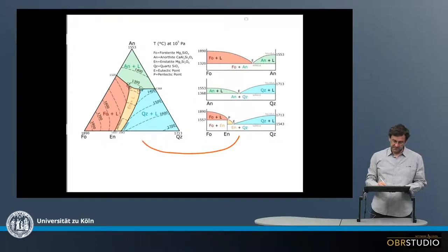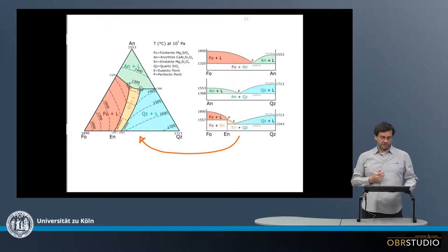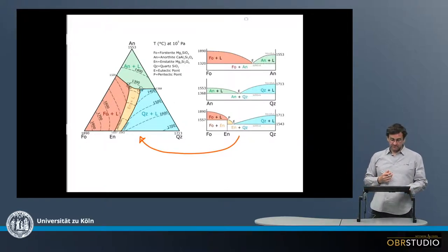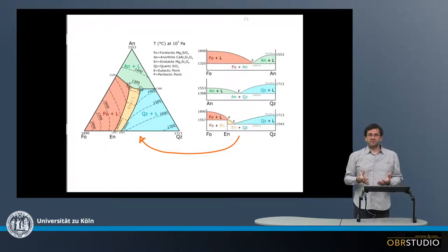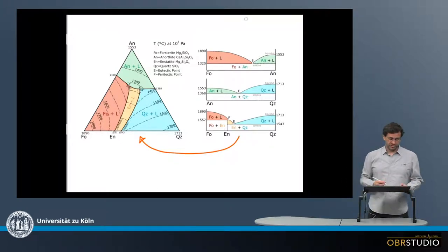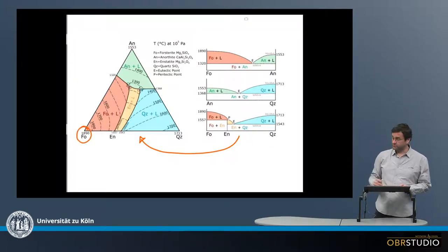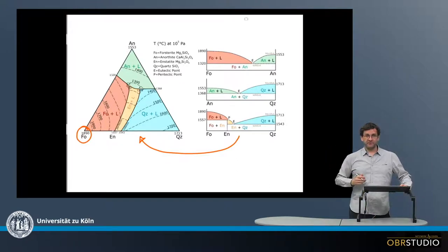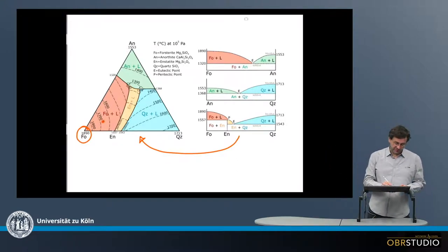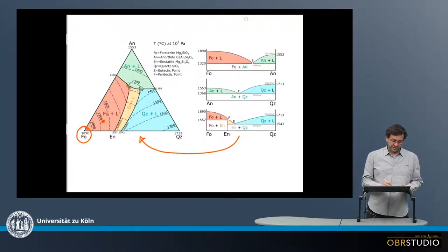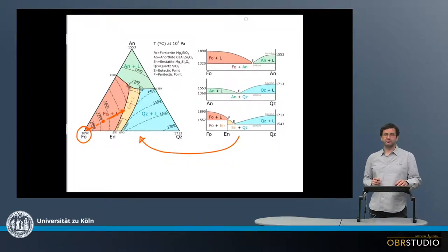For example, this binary phase diagram here constitutes the bottom line of the ternary phase diagram. Now, as I said, chondrules are mafic systems — quite forsterite- and magnesium-rich — so they should start somewhere in the forsterite primary phase field, for example somewhere like here. This means that upon cooling and crystallization, this composition will develop away from this point and onto the peritectic line here. What is happening on this peritectic line? For this, let's look at the binary phase diagram.